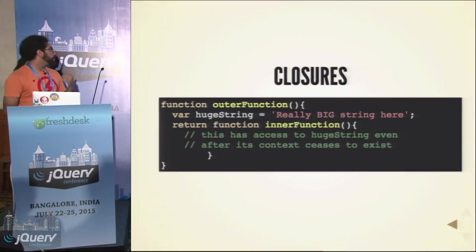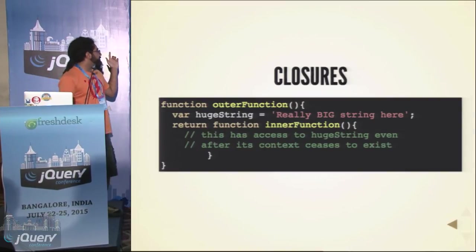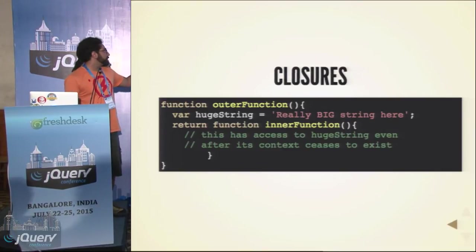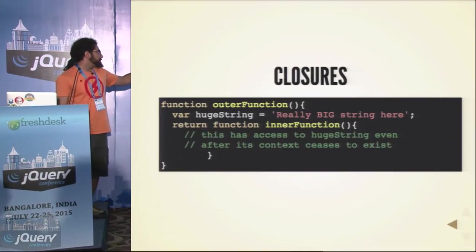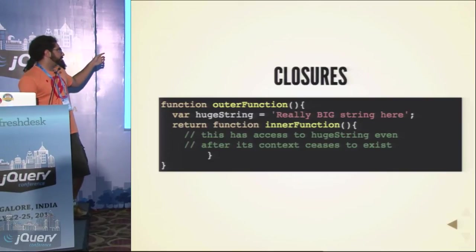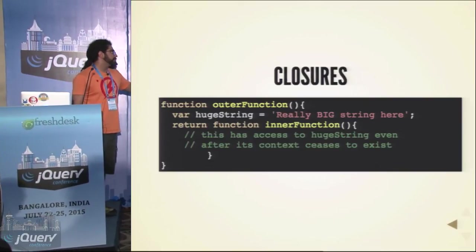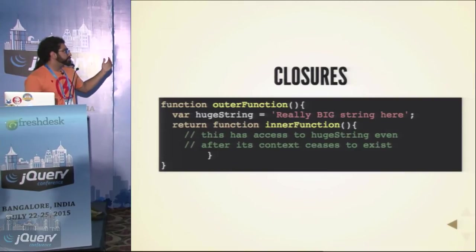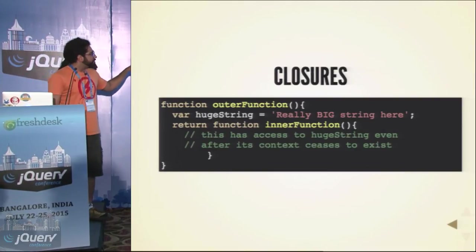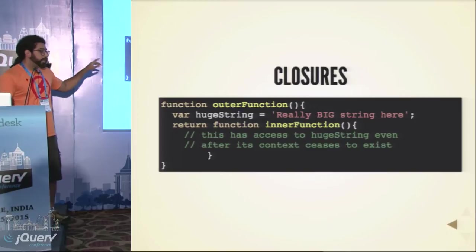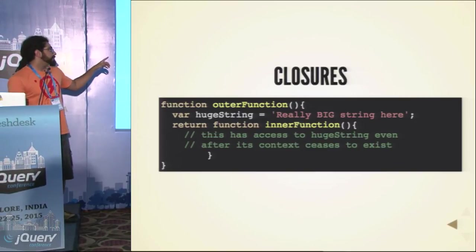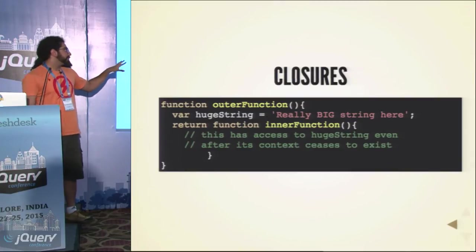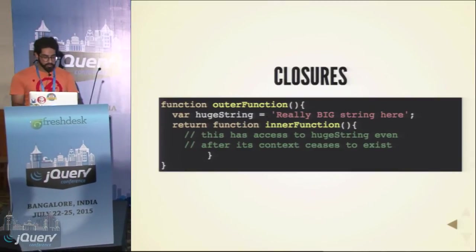For those who don't know, I'll quickly run through closures. This is a closure: the outer function returns an inner function, and the inner function has access to the huge string because of the way scoping works in JavaScript. Even after the inner function returns and the context of the outer function doesn't really exist, the huge string still exists — the inner function does have access to it even after the outer function's context is over.